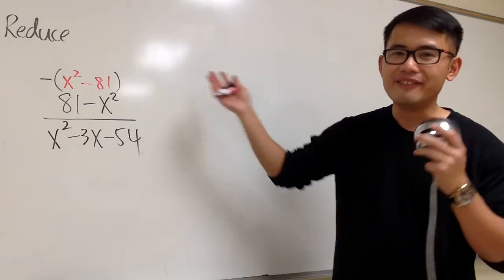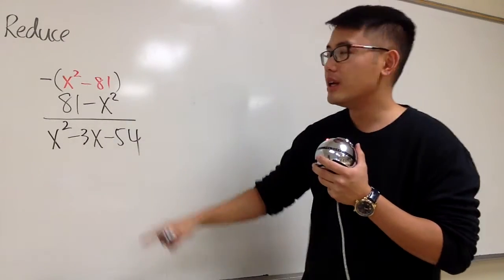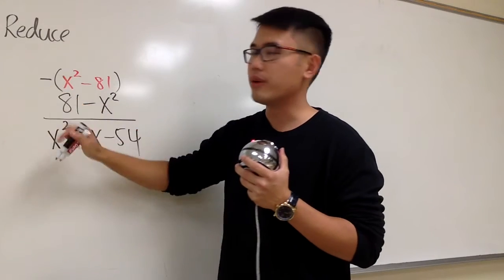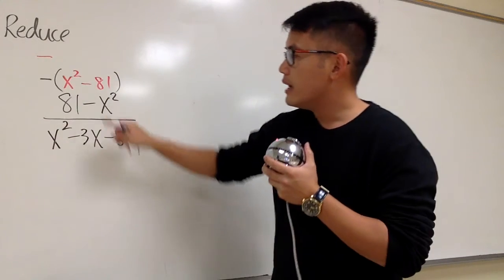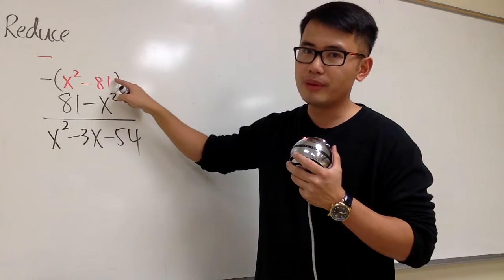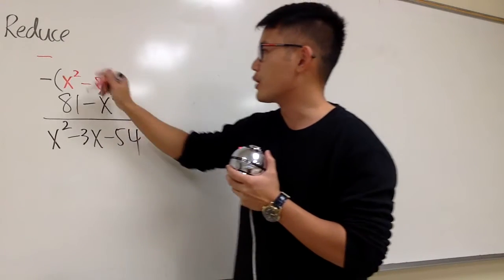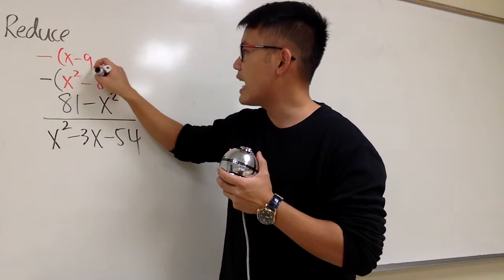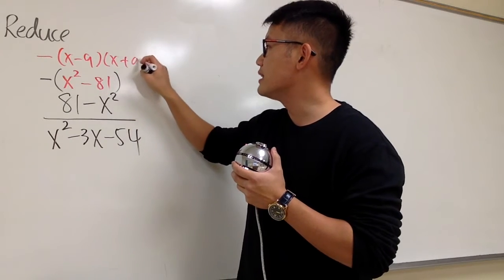And then, we can go ahead and factor this out. Be sure you still have this negative in front, though. So we have negative. And this is x squared minus 9 squared. Difference of two squares. So we are going to get x minus 9 times x plus 9.